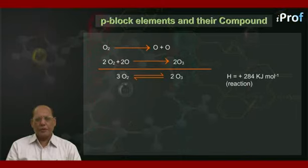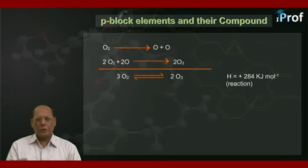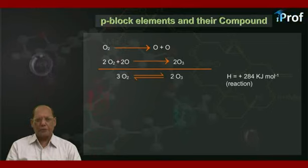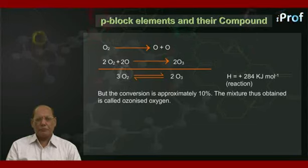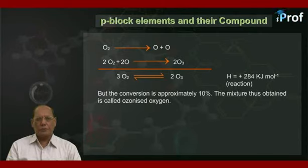The ΔH of the reaction is +284 kJ per mole, thus it is an endothermic reaction. The conversion is approximately 10%, and the mixture obtained is called ozonized oxygen.